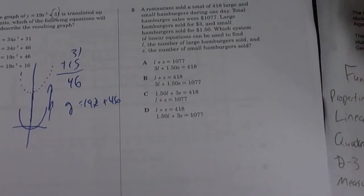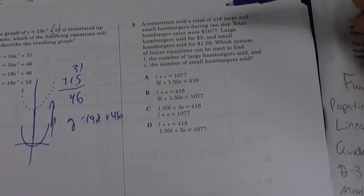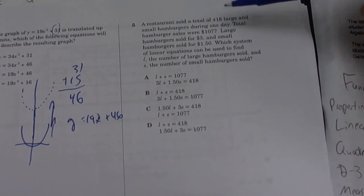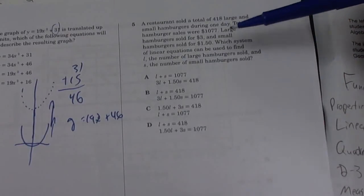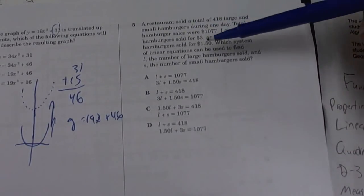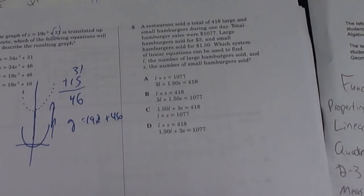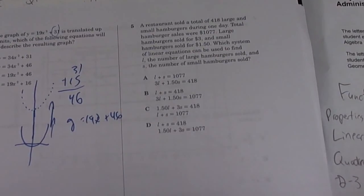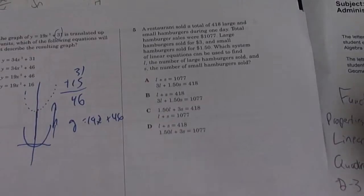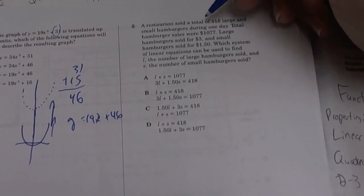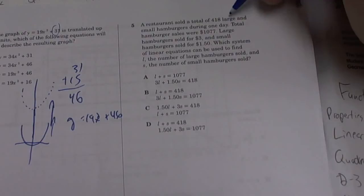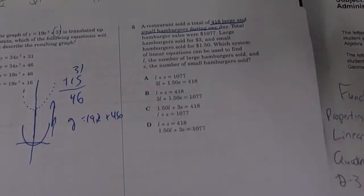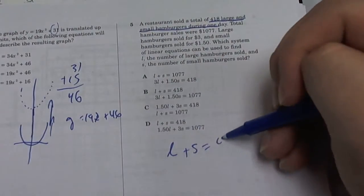Restaurants sold a total of 418 large and small burgers during one day. Total hamburger sales were $1,077. Large hamburger sold for $3 and small hamburger sold for $1.50. Which is the linear equation to be used to find L, number large sold, and S? So this is pretty much what you have to set up. We have to set up many equations to solve for how many were sold. So it says the total. So restaurant sold a total of 418 large and small burgers. Total of 418 large, small, and large burgers. So we know large plus small must equal 418.